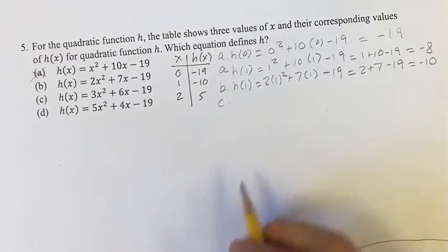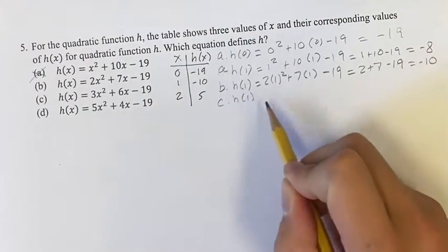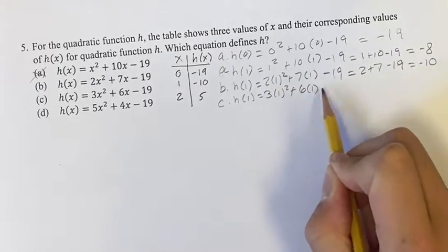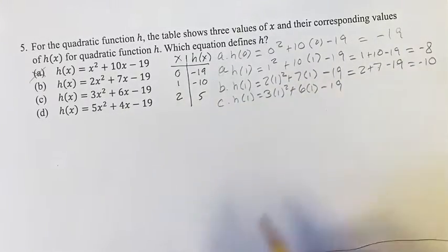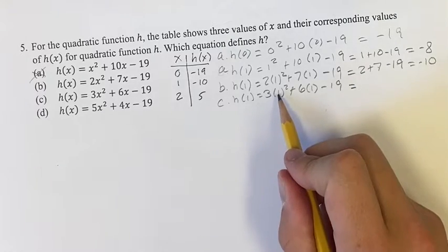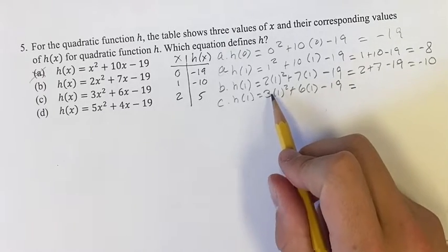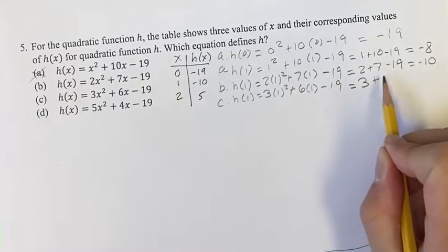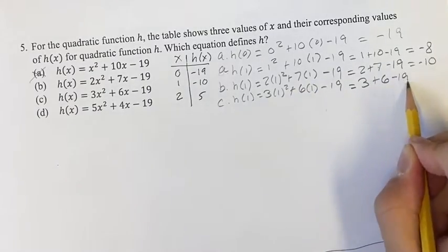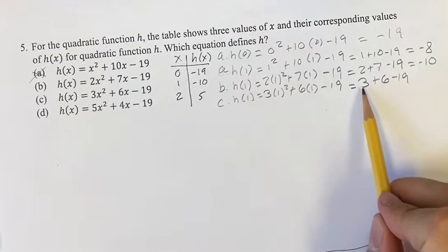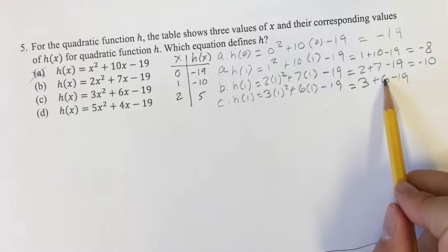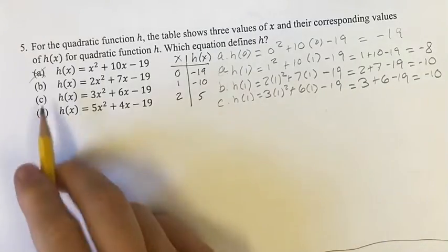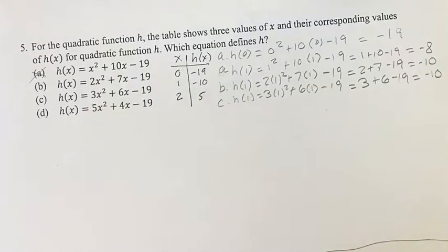With c, h(1) is going to be 3(1²) + 6(1) - 19. 3 times 1 is 3, plus 6 times 1 is 6, minus 19. In this situation, we have 3 + 6 = 9, 9 - 19 = -10. So answer c also works for x = 1.